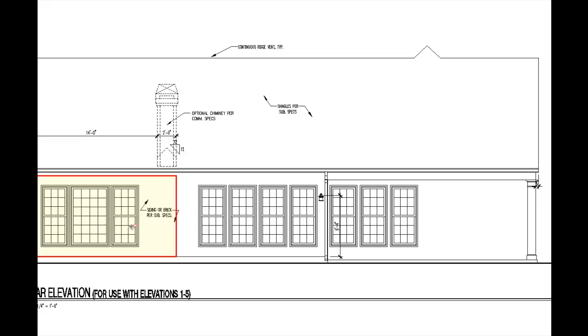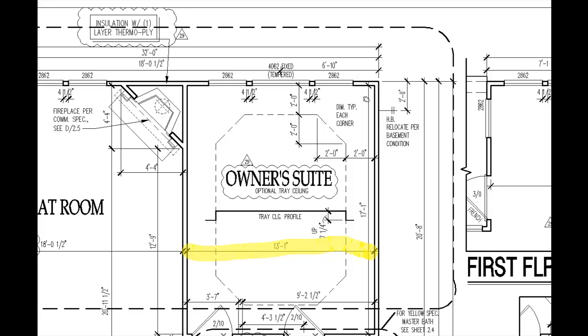The elevation view will also give us a couple other key pieces of information. We need to know the vertical orientation within our wall of those windows, and over to the end here we can see that it gives us the height of our windows, and it also tells us our wall height because it gives us the ceiling height for the building. The center window tag reads 4062, telling us the window is 4 feet 0 inches wide by 6 feet 2 inches tall. Each one of the flanking windows are 2 feet 8 inches wide by 6 feet 2 inches tall.